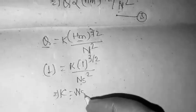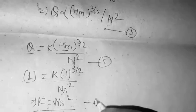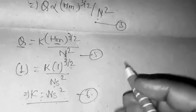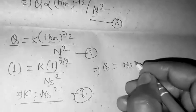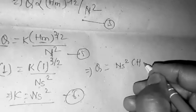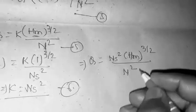From equation 5, Q is equal to N square into HM 3 by 2 upon K.